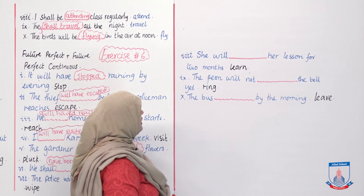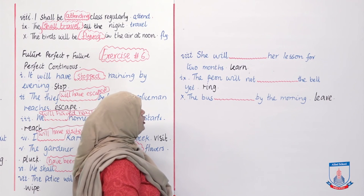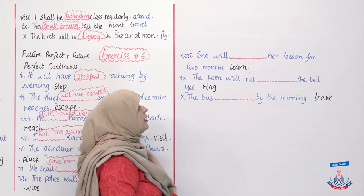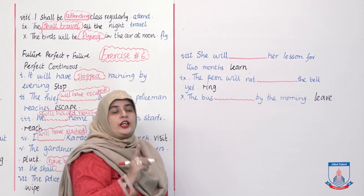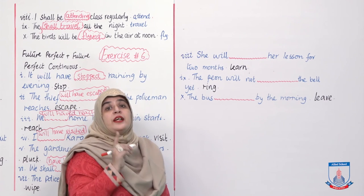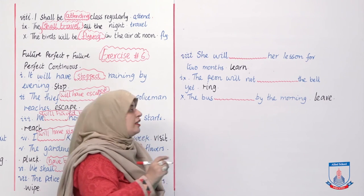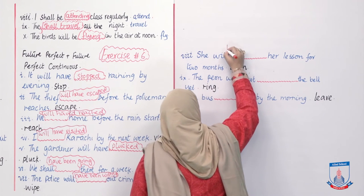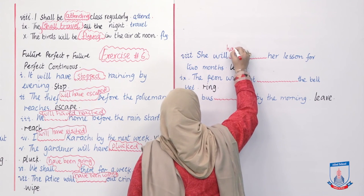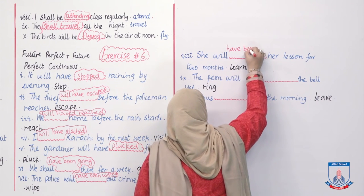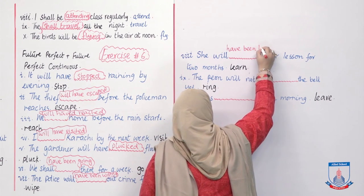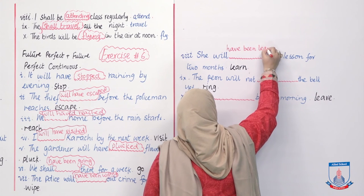'She will ___ her lesson for 2 months.' Answer: 'She will have been learning her lesson for 2 months.' Future perfect continuous — will have been + verb-ING.